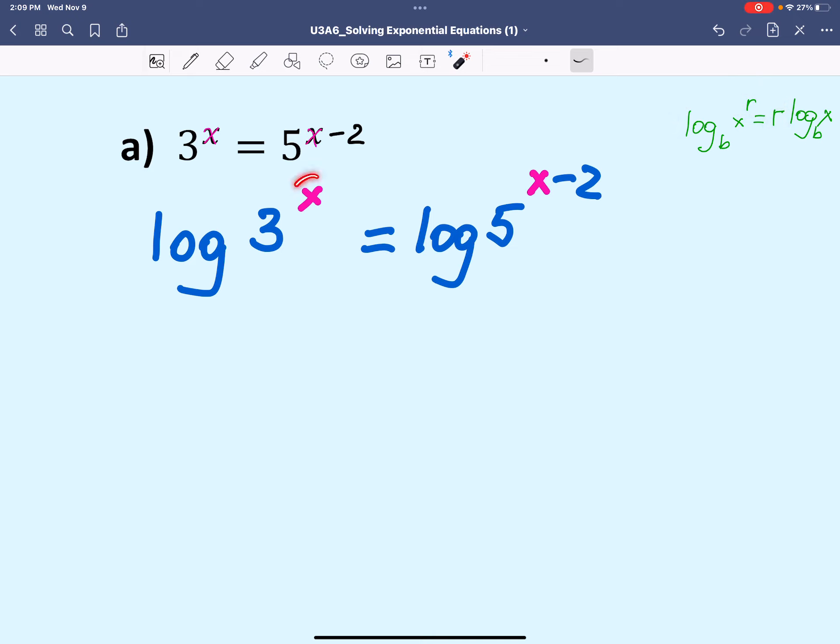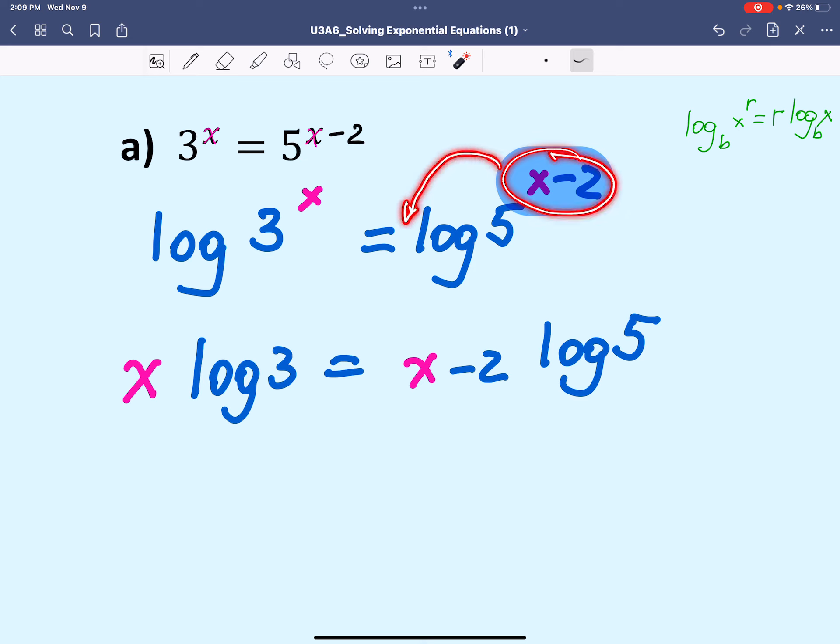So in this case, the power x will come to the front of the log term, and we have x log 3 equals, and the power for the other term is x minus 2. So this will come to the front, x minus 2, and then multiply by log of 5. Because we have an exponent in binomial form, we need to keep this in brackets. So x minus 2 is inside round brackets here.